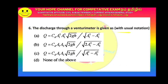Next question: The discharge through a venturimeter is given as option C. The discharge formula is Q = CD · A1 · A2 · √(2GH) / √(A1² − A2²). Note the square root of A1 squared minus A2 squared in the denominator.